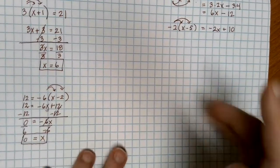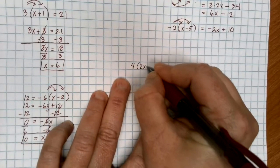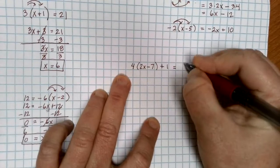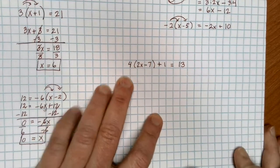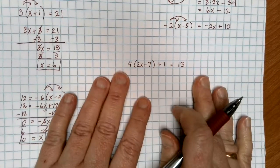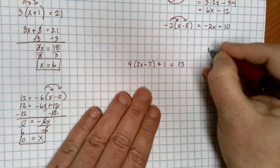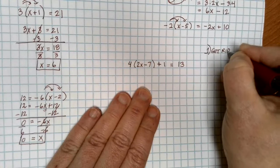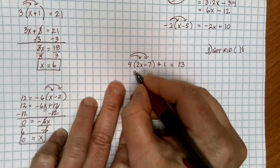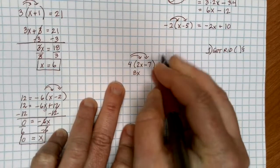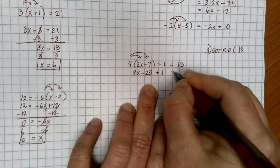Let's take a look at another example. Suppose that I have 4 times the quantity 2x minus 7, plus 1, equals 13. Before you do anything, be very methodical. First, you want to get rid of parentheses using the distributive property. Multiply the 4 through. 4 times 2x gives me 8x. 4 times negative 7 gives me minus 28. Then I still have this plus 1 here, equals 13.